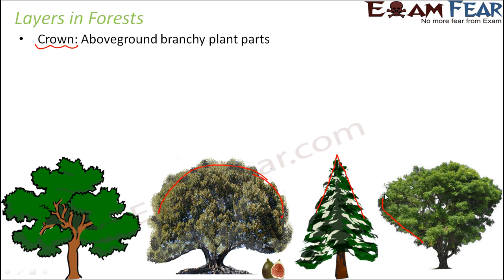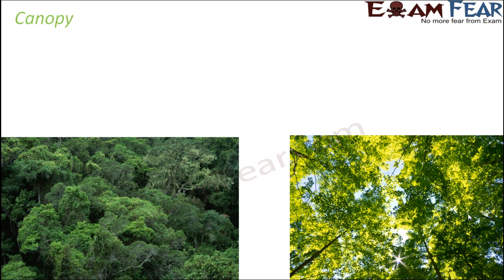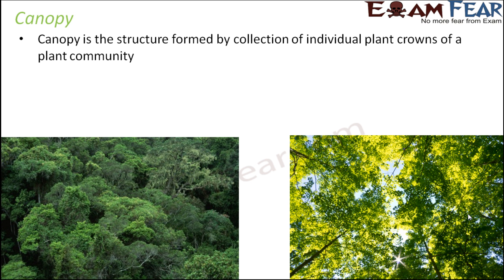Each plant has a differently shaped crown — some are tapered at the bottom and spread at the top, others are uniformly spread from bottom to top. In a forest with different varieties of plants of different sizes and shapes, all these crowns together form a layer of the forest, known as the canopy. The canopy is the structure formed by the collection of individual plant crowns of a plant community.